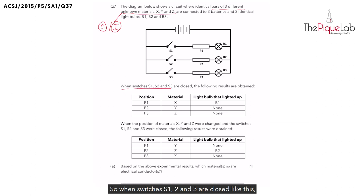So when switches S1, S2, and S3 are closed like this, only bulb B1 lights up. So the pathway that I'm tracing now, is it an open or closed circuit? It must be a closed circuit that allows electricity to flow through bulb B1, causing it to light up.